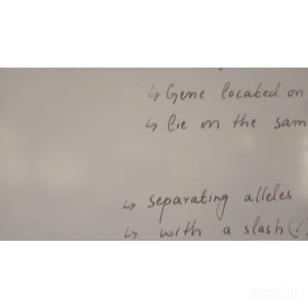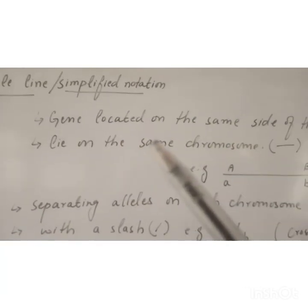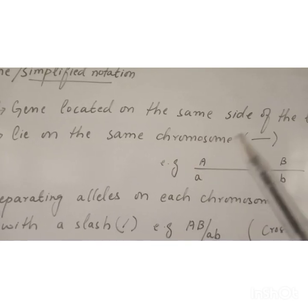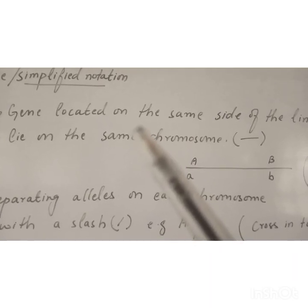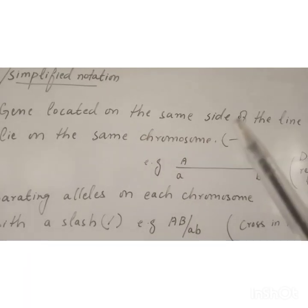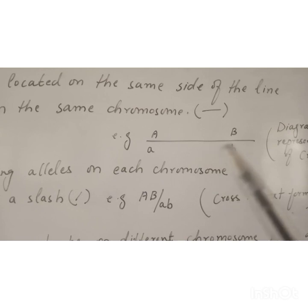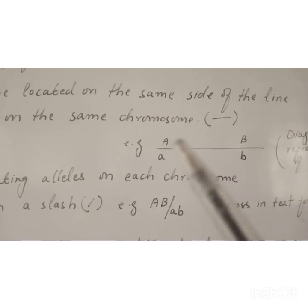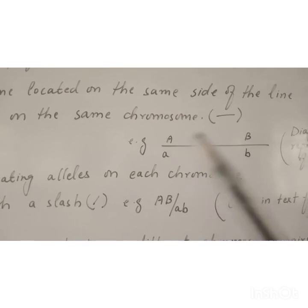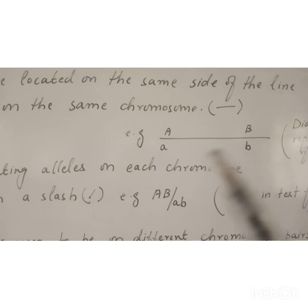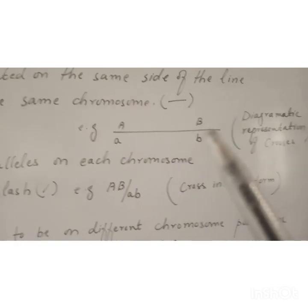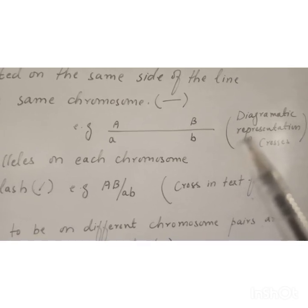Single lines are a simplified notation in which the genes located on the same side of the line lie on the same chromosome, represented as a single line. For example, a single line shows the location of genes — the dominant gene is on one side of the line, while on the second side of the line, the recessive genes are present. This representation is used for crosses which are diagrammatically represented.